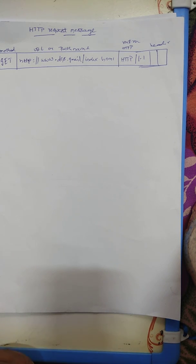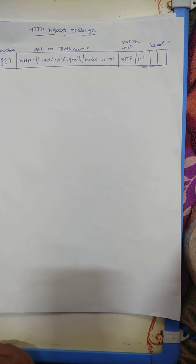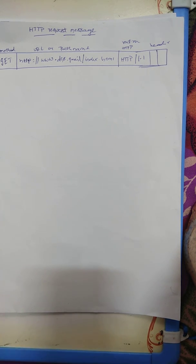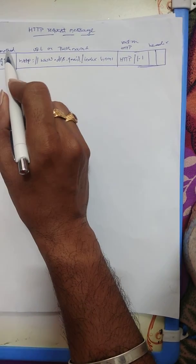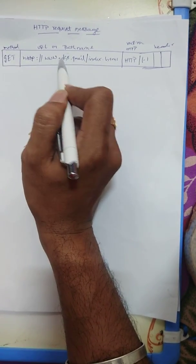Hello everyone. Today I am going to discuss a new topic in inter-process communication: HTTP request messages. Previously we discussed the characteristics of IPC and client-server communication. Today I am going to explain a new topic — HTTP request. Here we are using a method, you give the URL, and this is the version of HTTP.